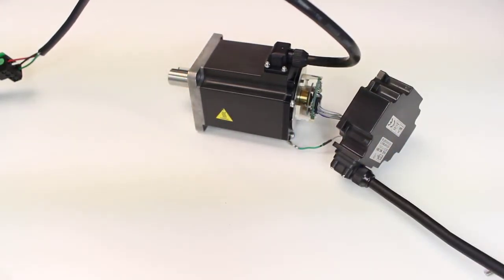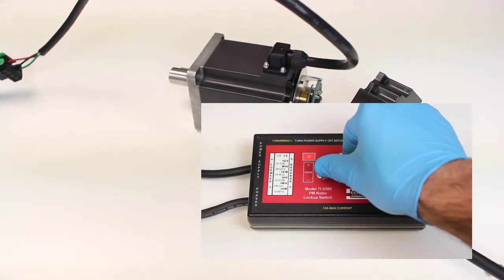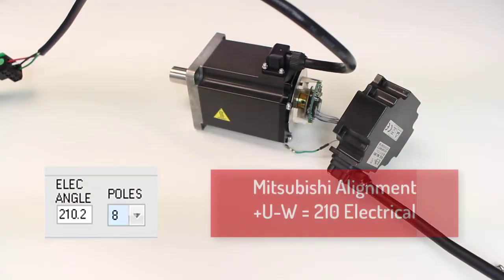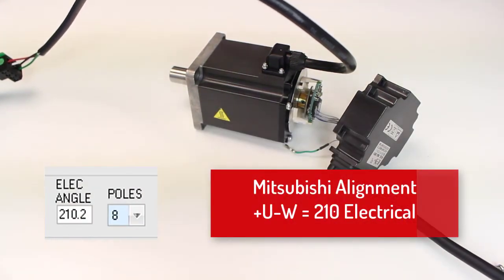Double check your alignment by locking the motor with plus U minus W, which should be 210 electrical degrees. The encoder is now correctly aligned.